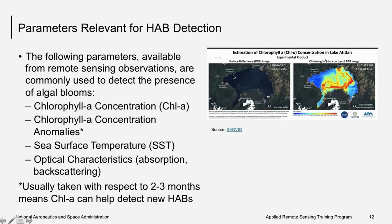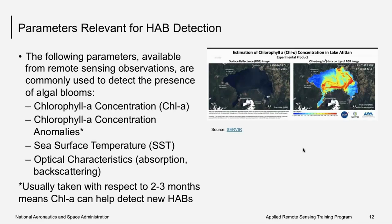The parameters typically used to detect algal blooms include: chlorophyll-a concentration (the main parameter), chlorophyll-a anomalies (usually taken as a two-to-three month mean departure), sea surface temperature, and optical characteristics such as absorption and backscattering. An example shows Lake Atitlán in Guatemala — a true-color image alongside chlorophyll-a concentration retrieved from Landsat, with red and yellow colors indicating high chlorophyll-a concentration and probability of algal bloom.